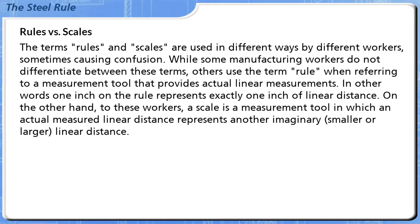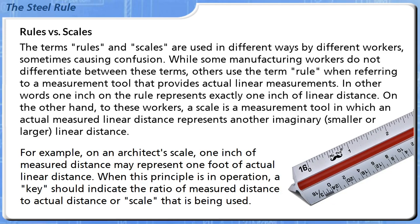a scale is a measurement tool in which an actual measured linear distance represents another imaginary, smaller or larger, linear distance. For example, on an architect's scale, 1 inch of measured distance may represent 1 foot of actual linear distance. When this principle is in operation, a key should indicate the ratio of measured distance to actual distance or scale that is being used.